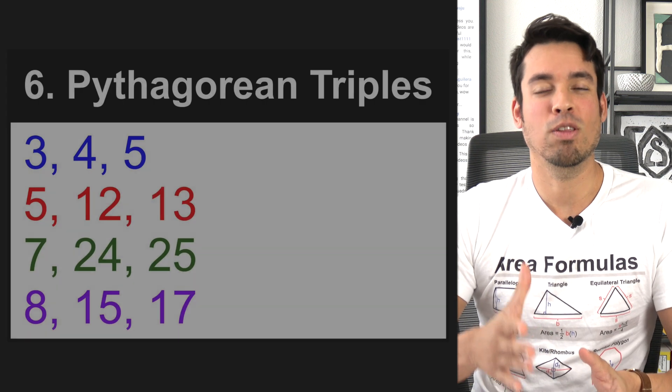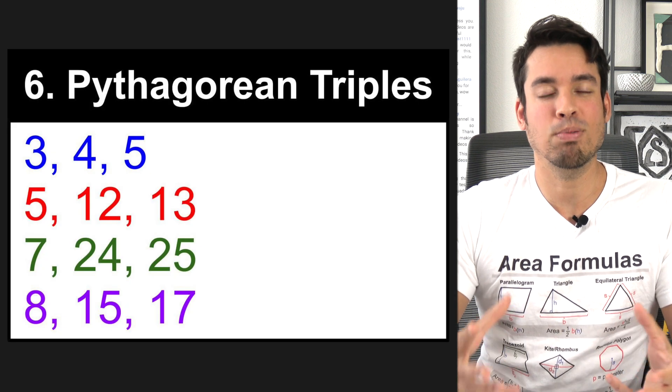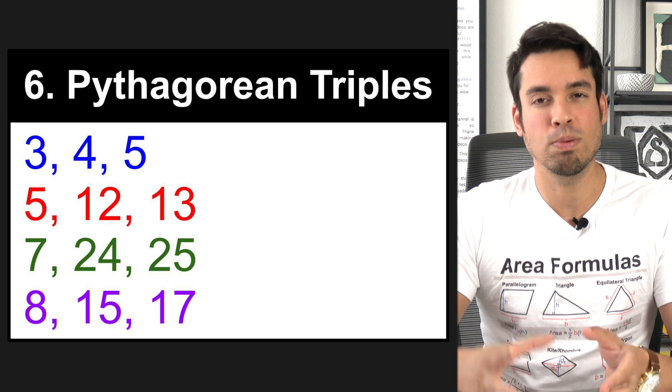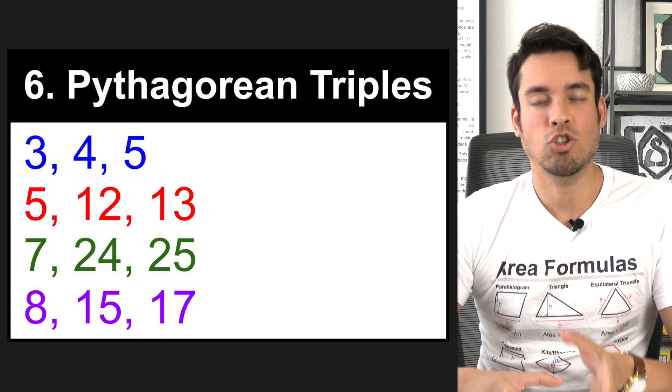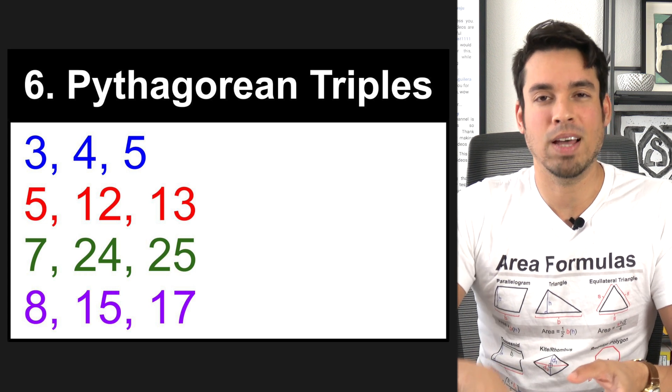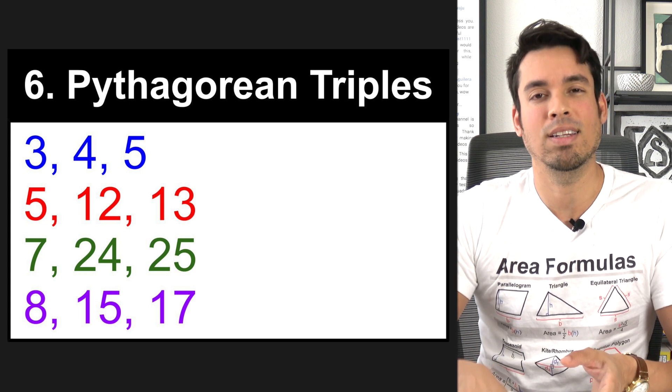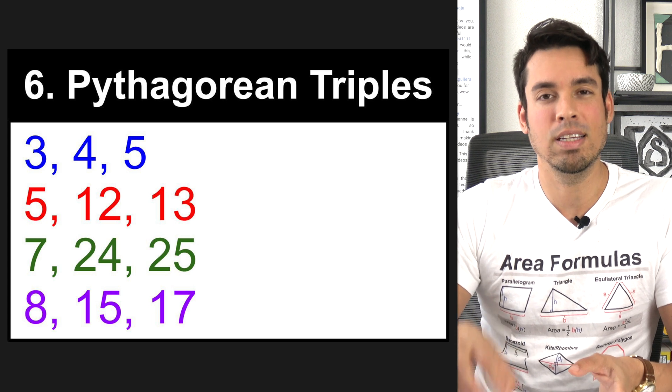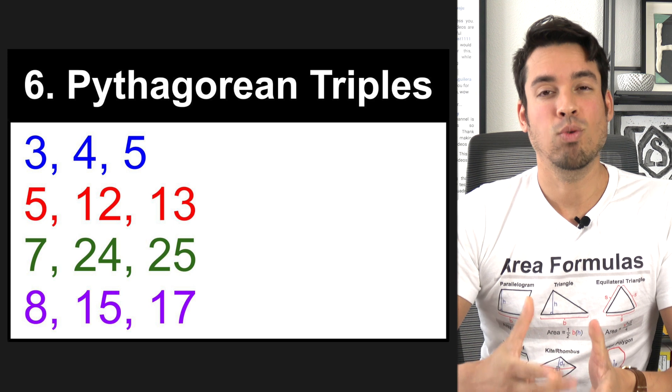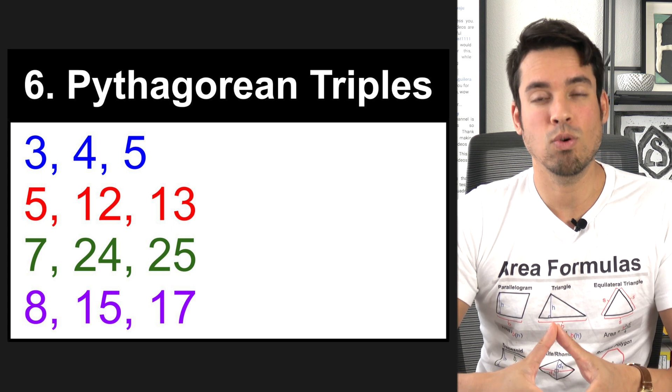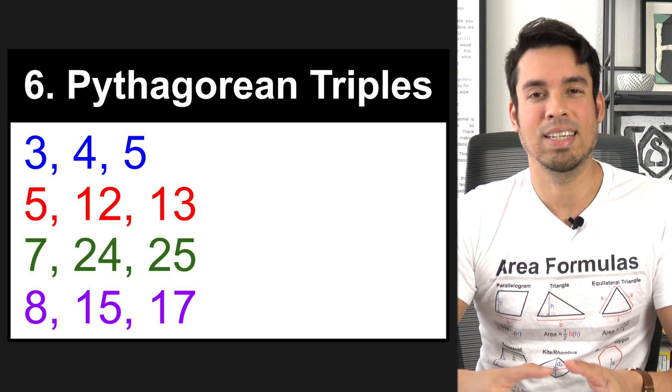Last but not least are the Pythagorean triples. And this isn't per se a formula, but these are super important number patterns that appear over and over on the SAT. If you have a right triangle showing up and it has integer values for the side lengths, more often than not, it's going to be one of these four Pythagorean triples. So we got a 3, 4, 5, 5, 12, 13, 7, 24, 25, and 8, 15, 17.